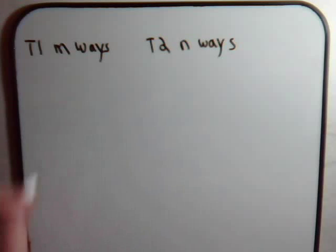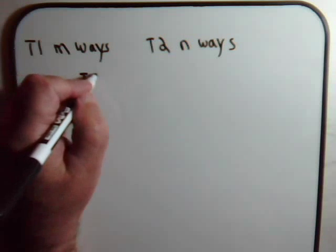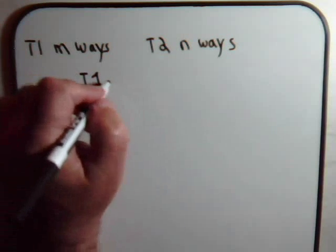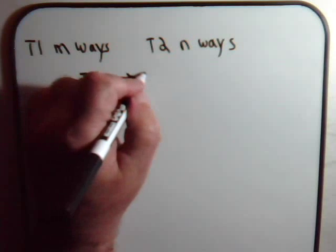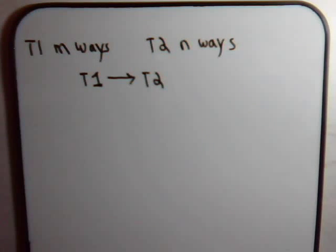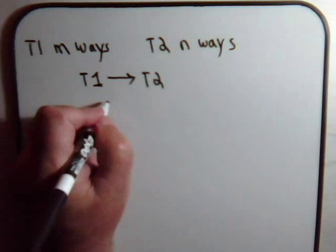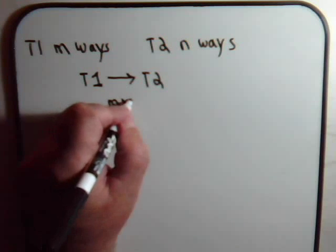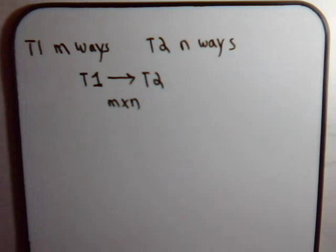Well if we're going to proceed and say we're going to perform task T1 first, then perform task T2, the number of ways we can go about this is m times n.